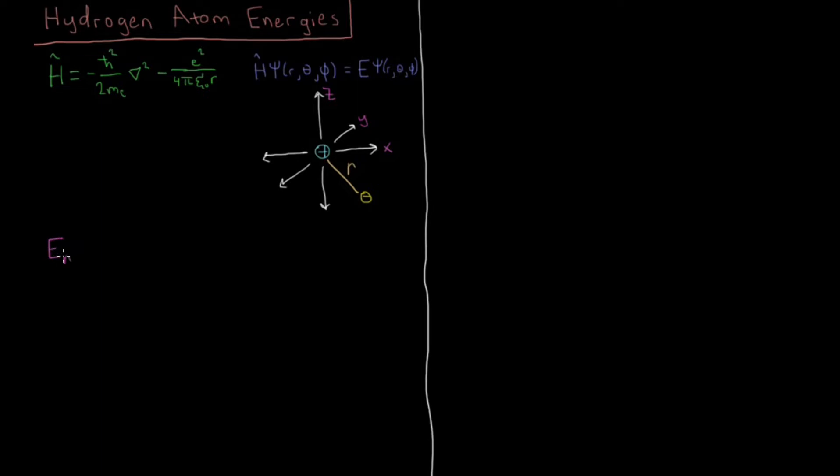So the energy levels only depend on a quantum number n, which comes out of the radial part of the Schrödinger equation, because for the angular part there is no potential energy, and the energy levels we get only depend on the quantum number n. So we get E of n equals minus mass of the electron times the magnitude of its charge to the fourth over 8 epsilon naught squared times h Planck's constant squared times n squared. So the energy is proportional to the inverse of n squared.